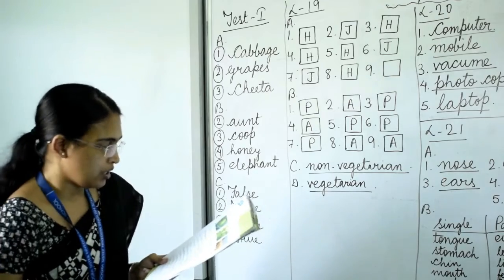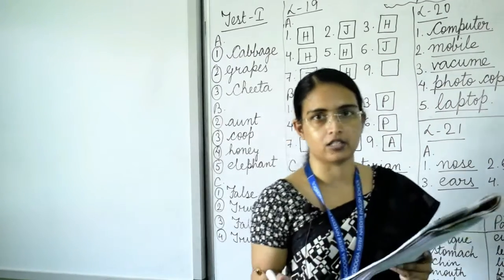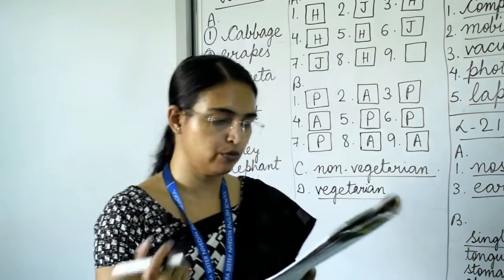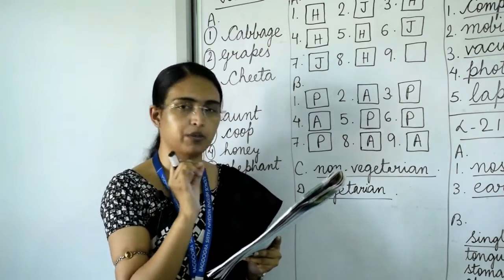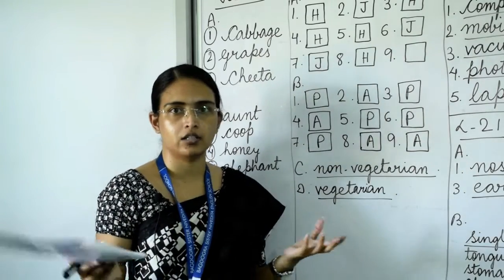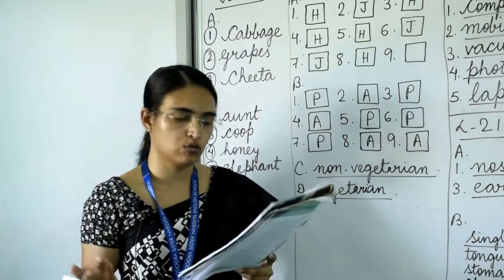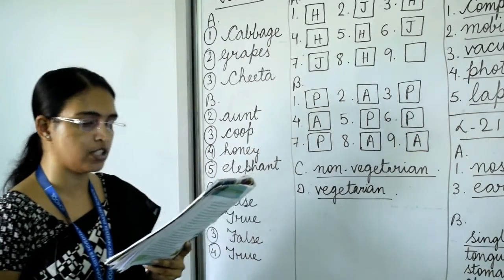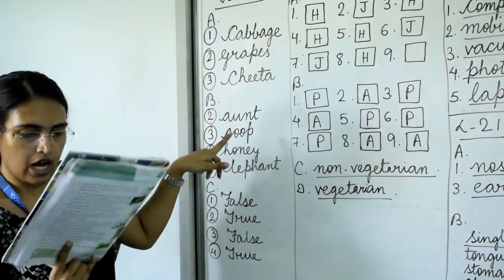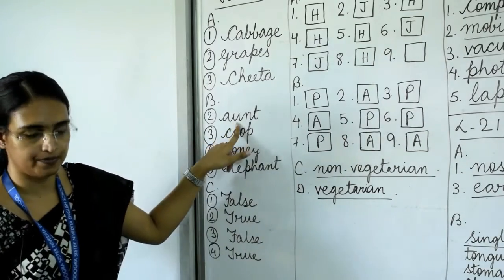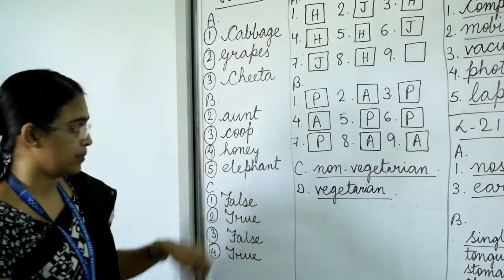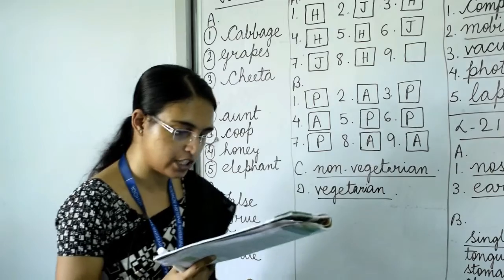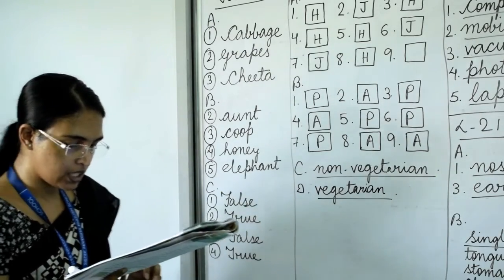Starting from B2: your father's and mother's sister is your aunt. Number three: a hen lives in a coop. Number four: we get honey from bees. Number five: the largest land animal is elephant. Question C: say whether the sentences are true or false.